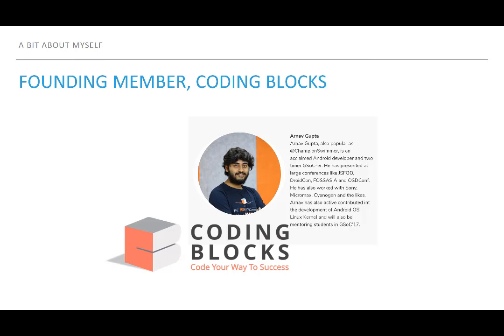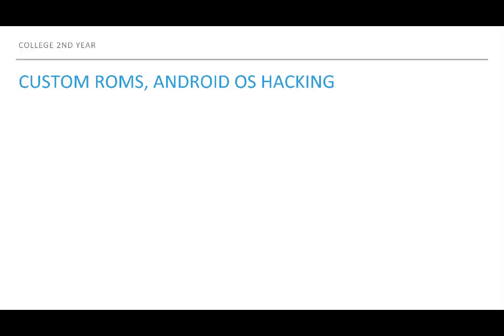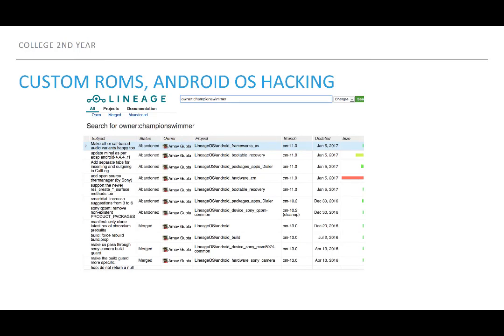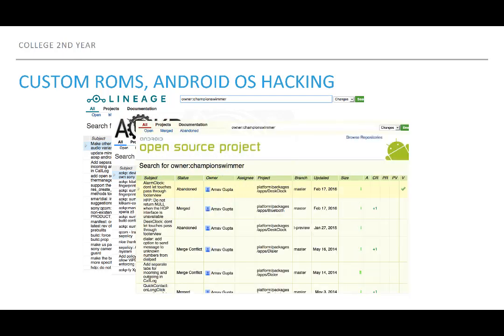We teach students core CS concepts like data structures and algorithms, and also things like Android app development and web development. My background in software development started with custom ROMs and Android operating systems like CyanogenMod, now renamed to Lineage. I was also part of a team called AOKP — another custom Android OS — and I have a few contributions to the Android open source project. If you're running any version of Android above KitKat, there's a tiny bit of code I wrote inside the contacts app or the SMS app.